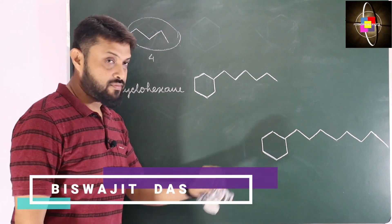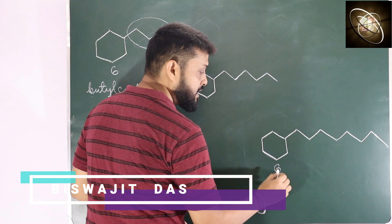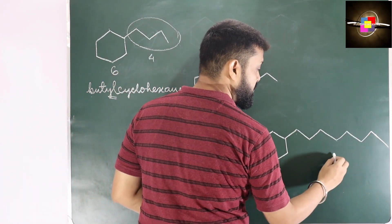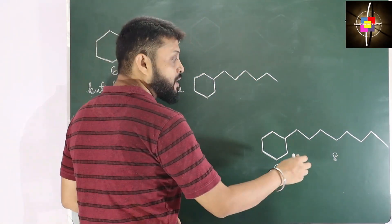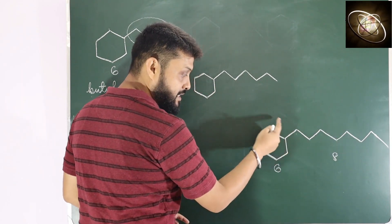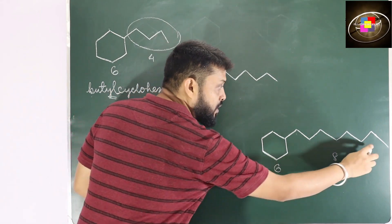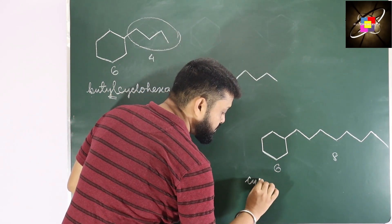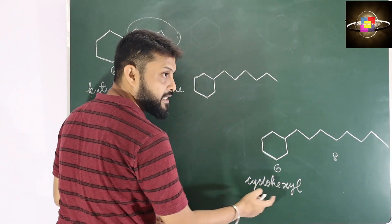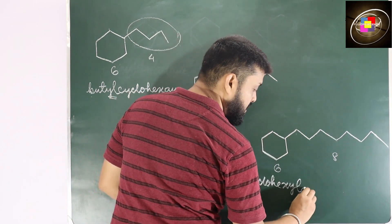Now moving to this example. Here we have 6 carbons in the cycle and 8 carbons in the aliphatic chain. We will give priority to the aliphatic chain, so it becomes the base, and the cyclic portion becomes the substitution. The cyclic portion — cyclohexane — followed by octane: cyclohexyloctane.